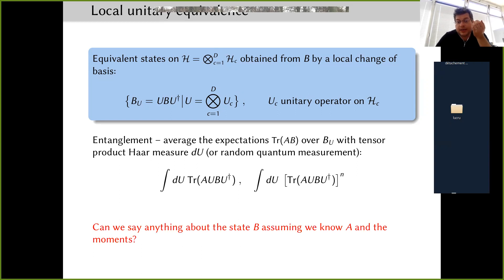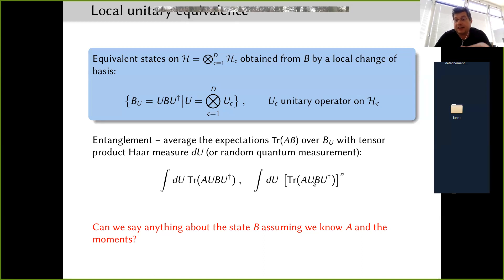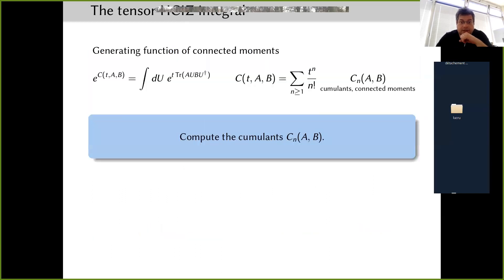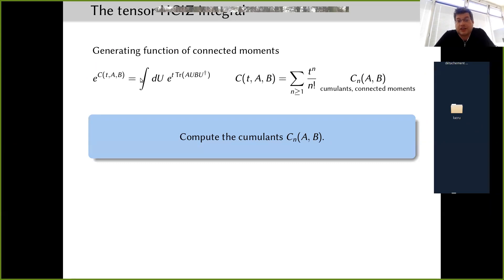The physical question is: can we say anything about a state rho, assuming we know an observable A and we know the moments — specifically the trace of (A U rho U-dagger)^n averaged over the entire group? If I give you the values of these moments and the observable A, can we infer anything about the state rho, and in particular about its entanglement properties? This translates into computing the Harish-Chandra–Itzykson–Zuber integral. The formulation is in terms of the generating function of the moments.